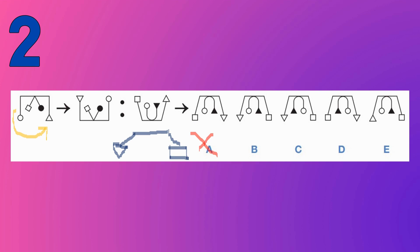Option E has the triangle pointing upward, which is not correct, so we rule out E. We're now left with only B and C. Looking at the inner pattern, when the shape is turned around the triangle should come to the right side. Only option B has the triangle on the right side, so B is the answer.